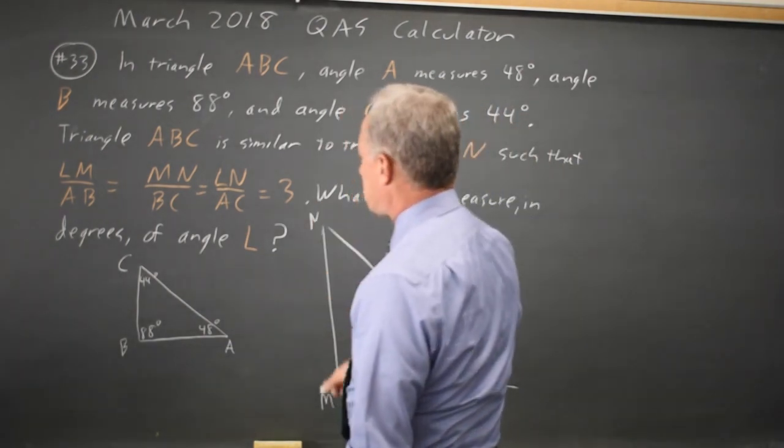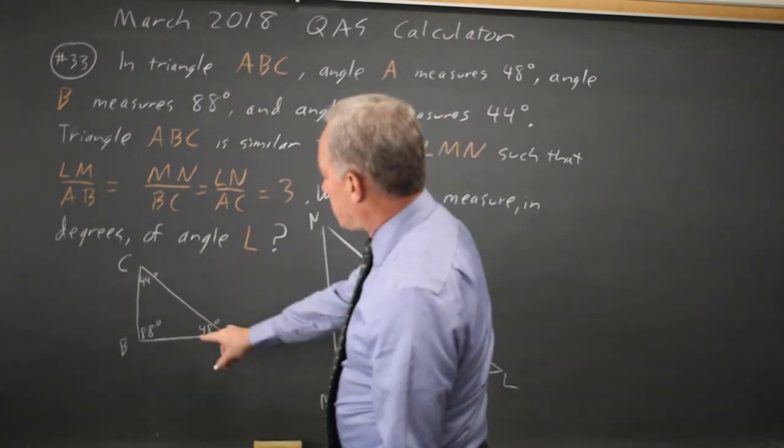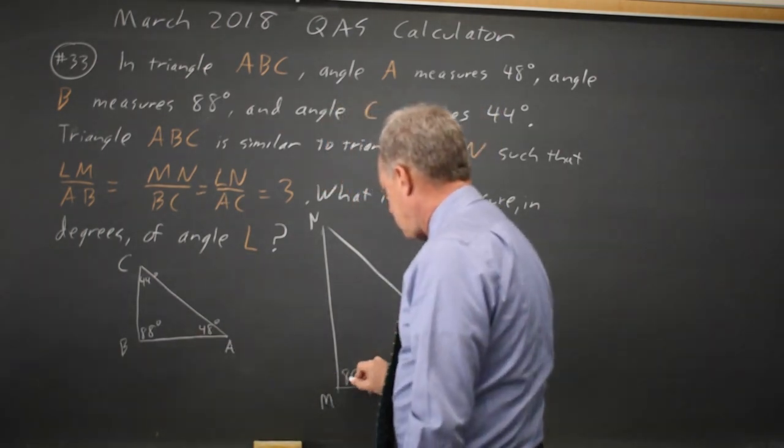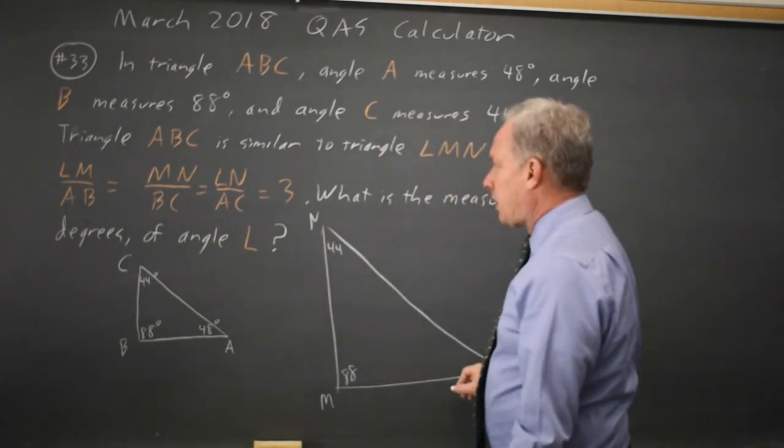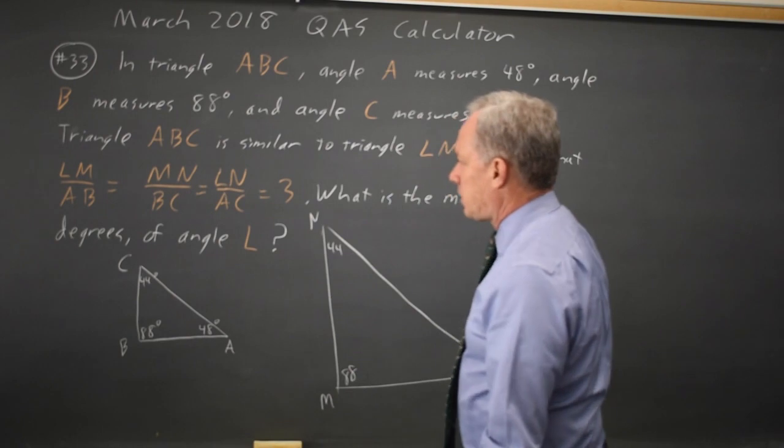LMN. LM corresponds with AB. MN with BC. And LN with AC.